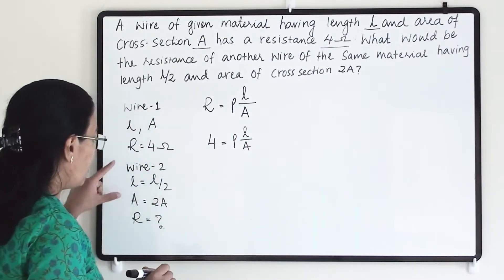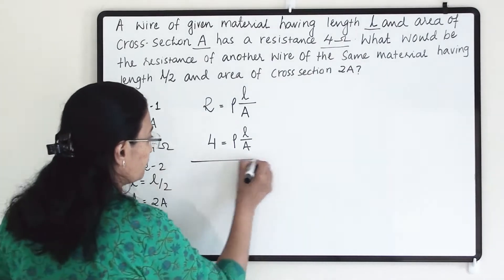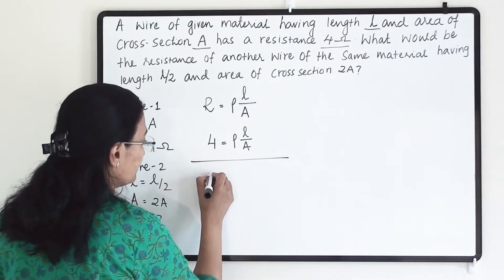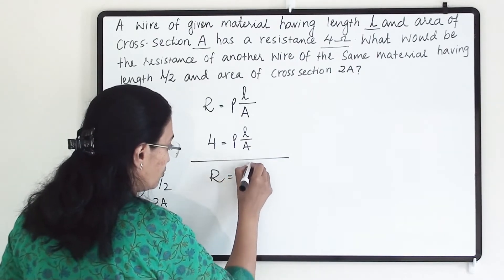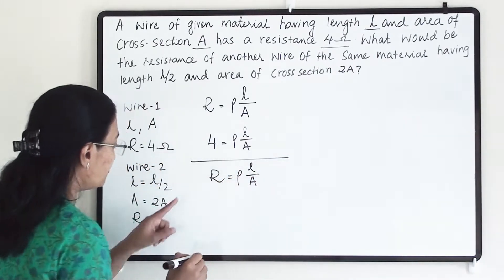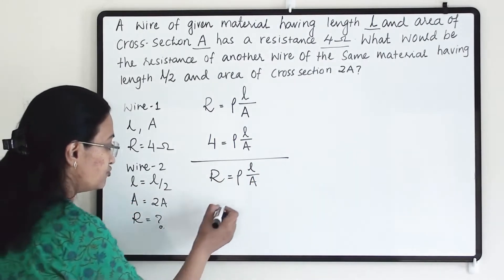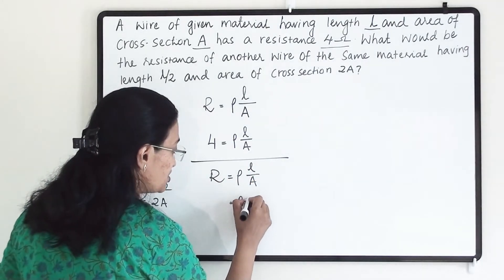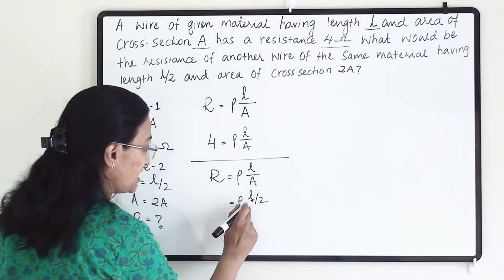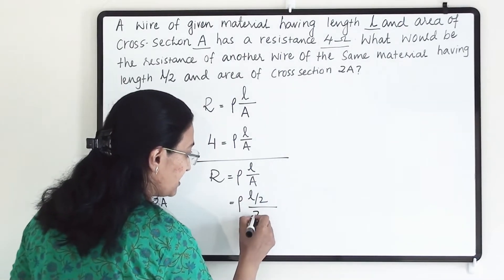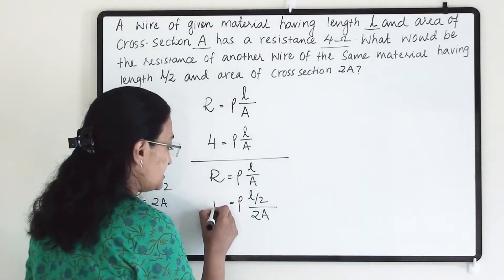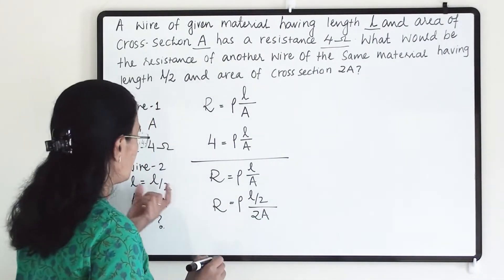Now let us check about wire 2 for the second situation. That similar formula I am writing: R equals rho L by A. But here we have to replace L with L by 2 because we are changing the length which is going to be L by 2. And area we are taking instead of A, we are writing 2A. Now this resistance is with respect to wire 2.